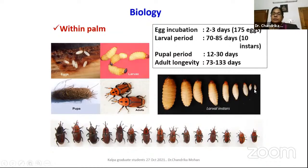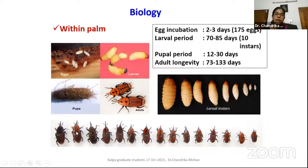There are 10 larval instars. The morphological size varies very much across instars, and the markings on the pronotum also vary — there are one, two, three, or four black dots — but it is not a species difference. All are Rhynchophorus ferrugineus only.